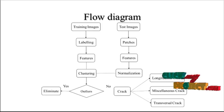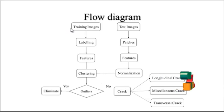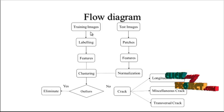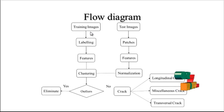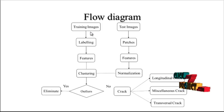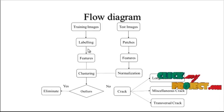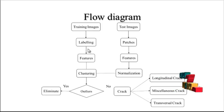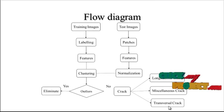Now we are going to discuss about the flow diagram of the process. At first, the training images are taken from the dataset — for example, thousands of images are considered as clustered trained data. After getting the trained data, labeling is applied. For example, if there are 3 output categories, those 3 categories are labeled separately.